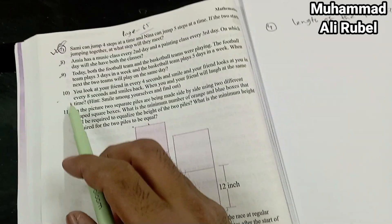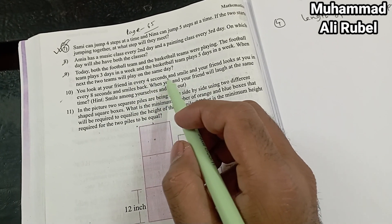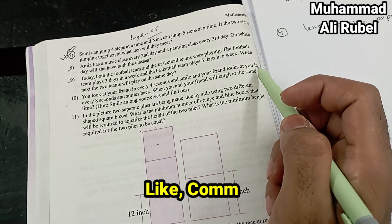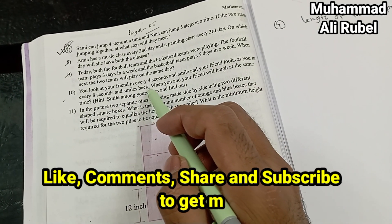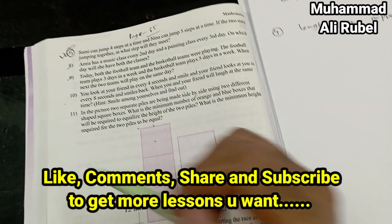Page number 65, number 10. You look at your friend every four seconds and smile, and your friend looks at you every eight seconds and smiles back. When will you and your friend laugh at the same time?